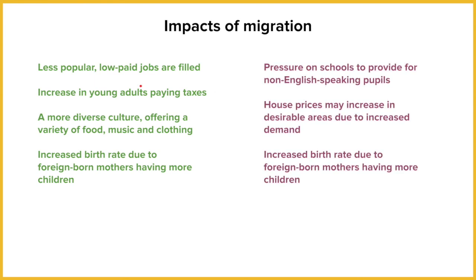The negatives: migration is going to place pressure on our schools. As more young families come in and have children or bring children with them, it places pressure on school places — particularly in providing support for non-English speaking pupils. Housing prices will increase as more people come into the country and demand for housing rises. An increased birth rate due to foreign-born mothers having more children is a positive, but it could also be a negative — more children being born places increased pressure on schools, healthcare, and housing prices. So it could be seen as a double-edged sword.